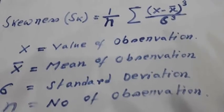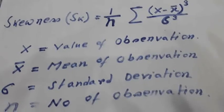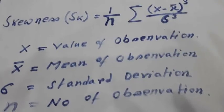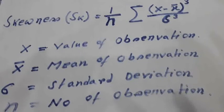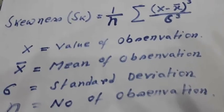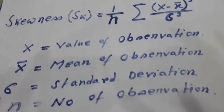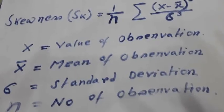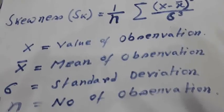This skewness measures the asymmetry of a distribution about its peak. Actually, this skewness is a number which describes the shape of the distribution.